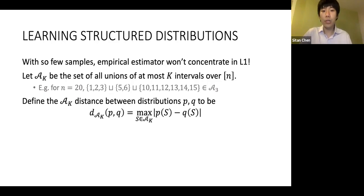Namely, if I have two distributions p and q, the A_k distance between p and q is the max absolute difference between the weight that p assigns to some subset in A_k and the mass that q assigns to that same subset. Note that when capital K equals little n, the domain size, then the A_k distance is precisely the total variation distance because A_n is just all subsets of n.